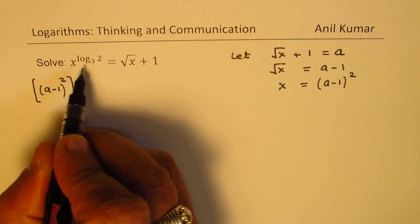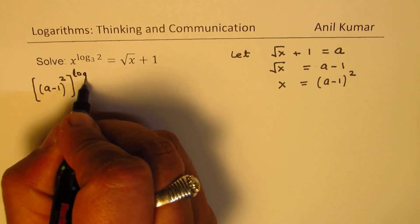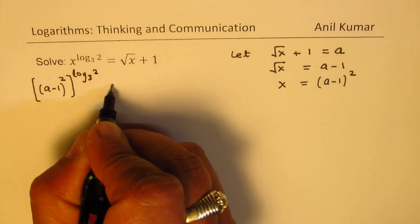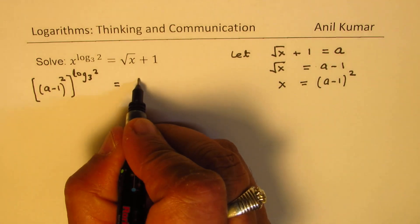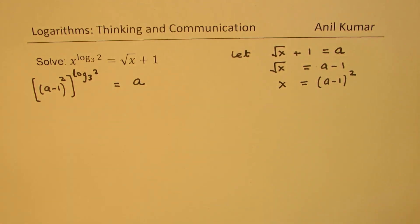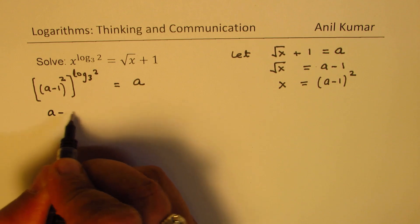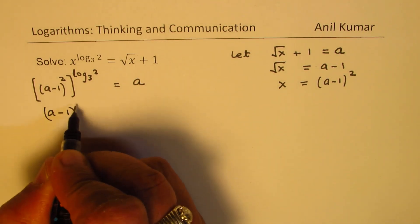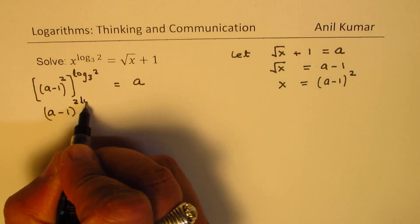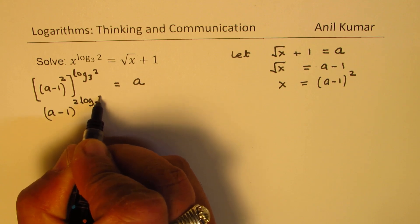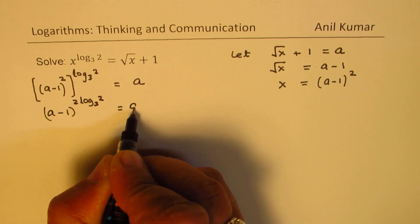That is to the power of log to the base 3 of 2. The right hand side is a. Now we can multiply the powers using the power rule. We get a minus 1 to the power of 2 log to the base 3 of 2 equals a.